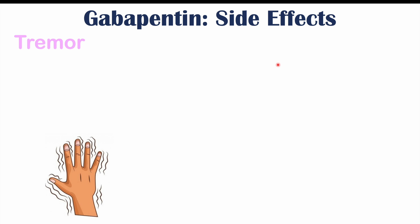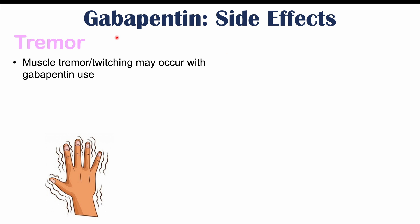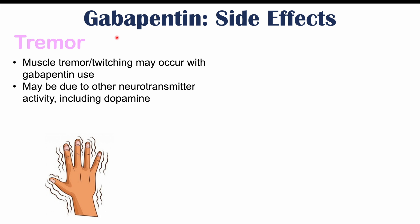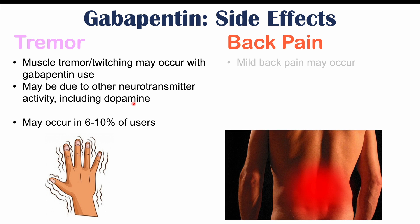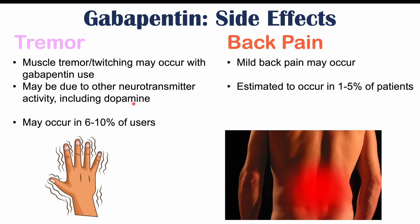Tremor — muscle tremor or twitching — may occur due to alterations in regulation of other neurotransmitters, including dopamine. Because neurotransmitters don't operate mutually exclusive to one another, affecting one can affect others. This may occur in 6 to 10% of users. Mild back pain is also a possible side effect, estimated to occur in 1 to 5% of patients.